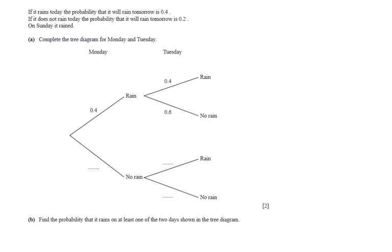So here it goes. It says: if it rains today, the probability that it will rain tomorrow is 0.4. If it does not rain today, the probability that it will rain tomorrow is 0.2. On Sunday it rained. Complete the tree diagram for Monday and Tuesday. As you can see, Monday and Tuesday - the day before Monday would have been Sunday.